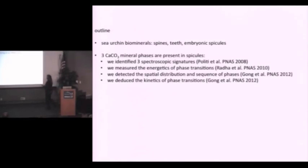So I'm going to be telling you about sea urchin biominerals, those are the spines, the needles that we're all familiar with, their teeth, their embryonic spicules, which are the biominerals that I'm mostly going to be showing data about today. There are three calcium carbonate mineral phases that are present in these sea urchin spicules.